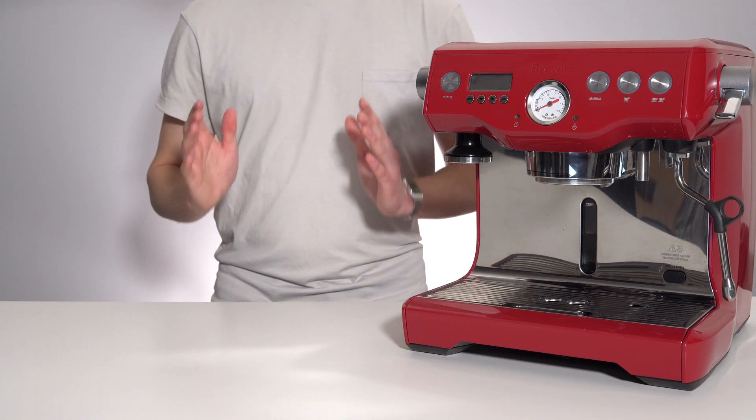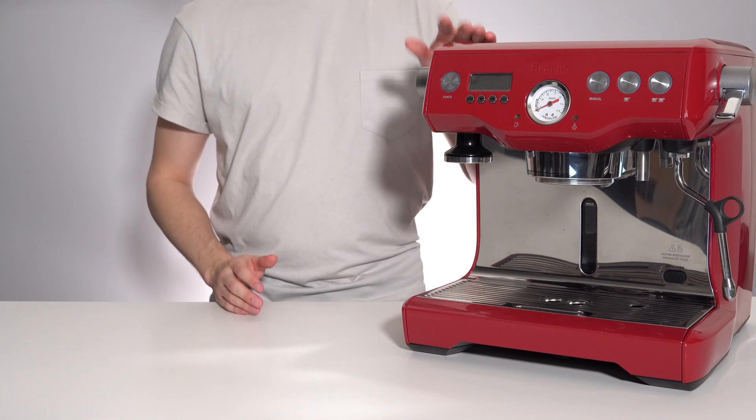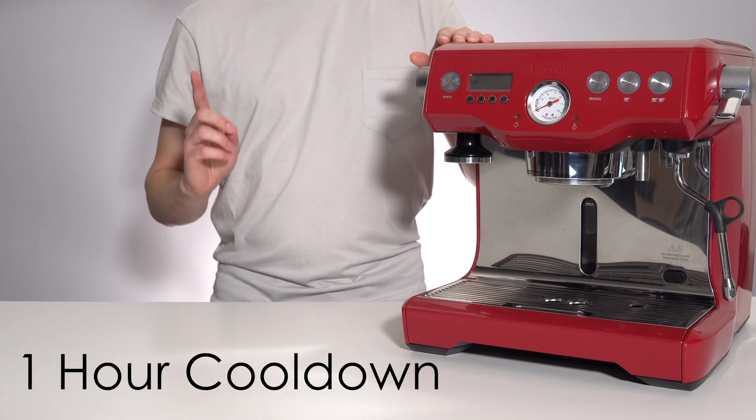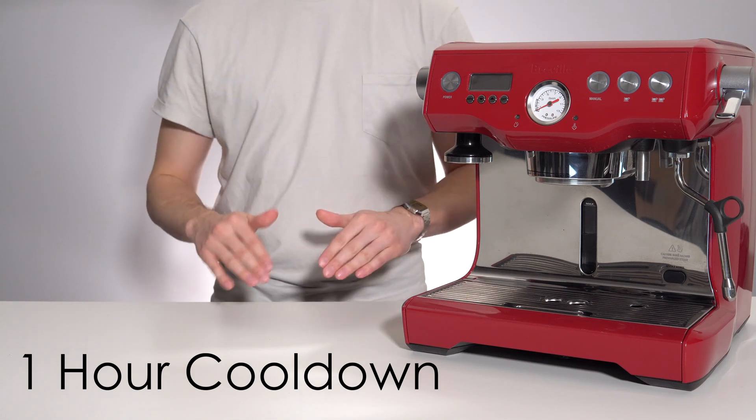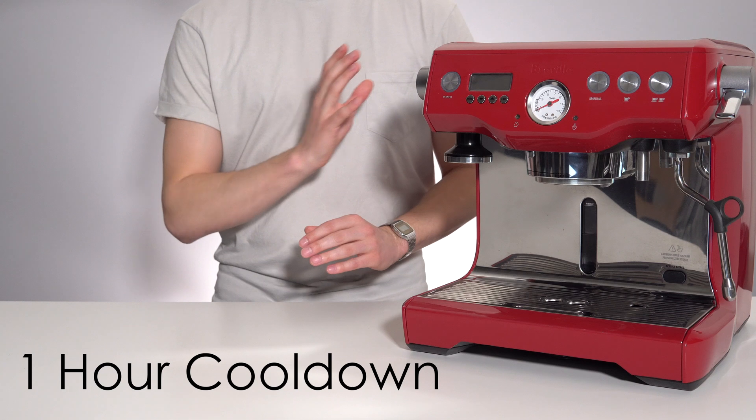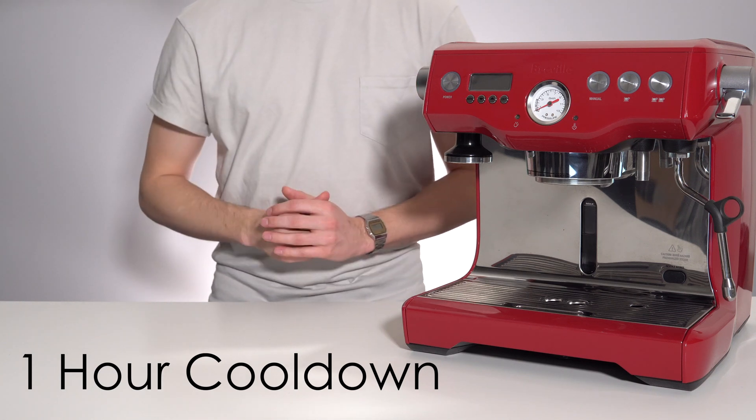The first thing that you need to do before even starting the descale process itself is ensure that your machine has been cooling down for at least one hour before starting. This is for your safety as the machine needs time to cool down because we will be emptying some of the water directly from the steam and brew boilers in this process.